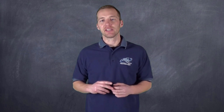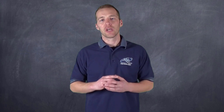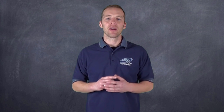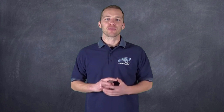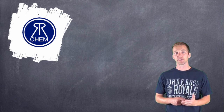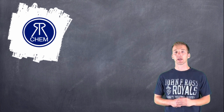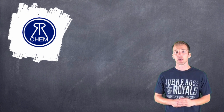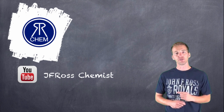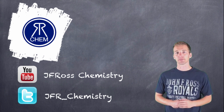We've now learned two methods for balancing redox reactions under acidic and basic conditions: the half-reaction method and the oxidation number method covered in this video. Hopefully this helps you out. If you're looking to watch this video again or find additional videos on chemistry topics, check out our YouTube channel or follow us on Twitter. Thanks for watching.